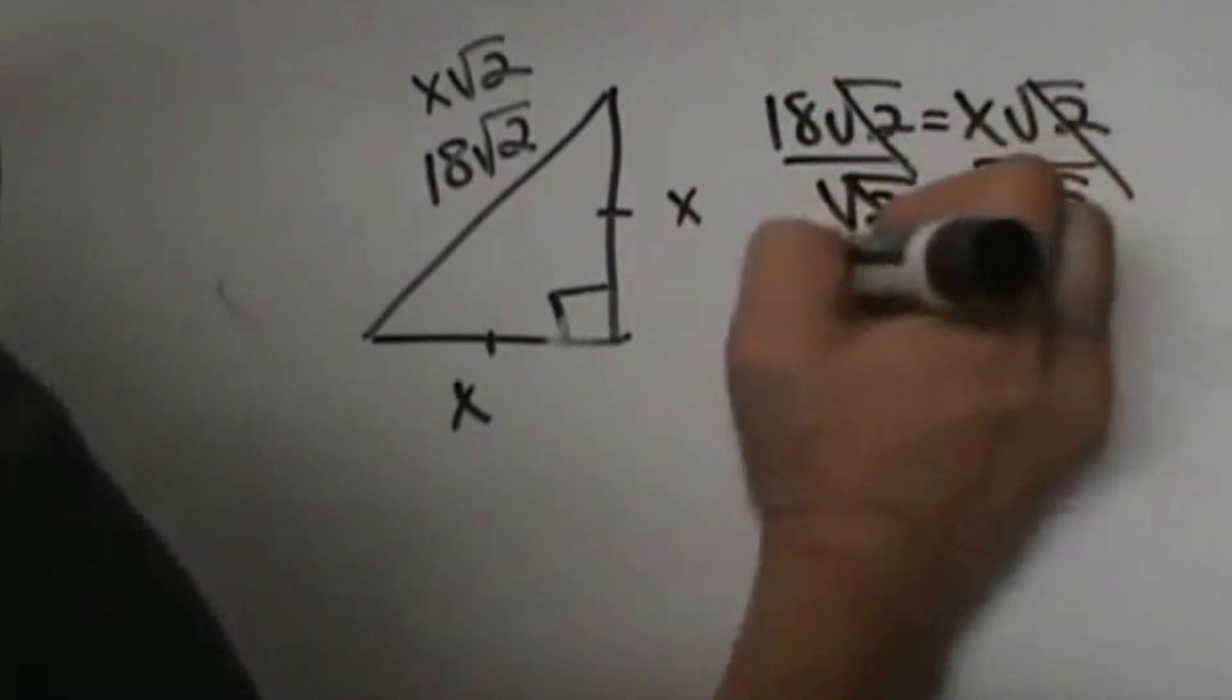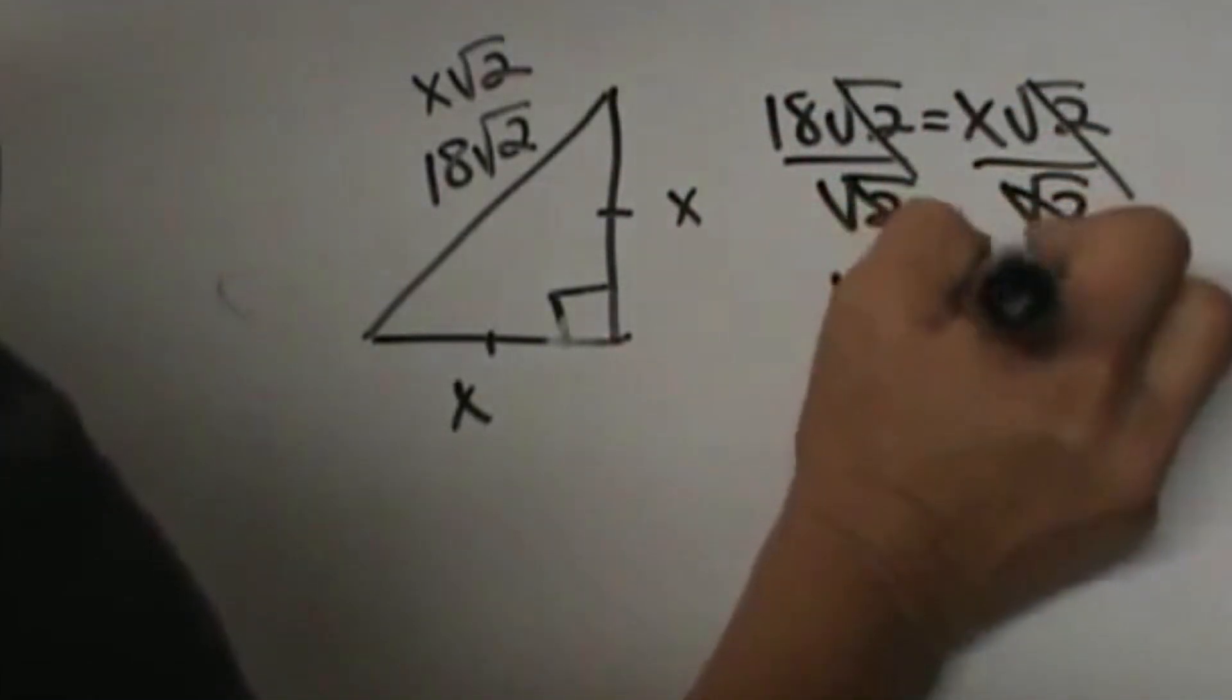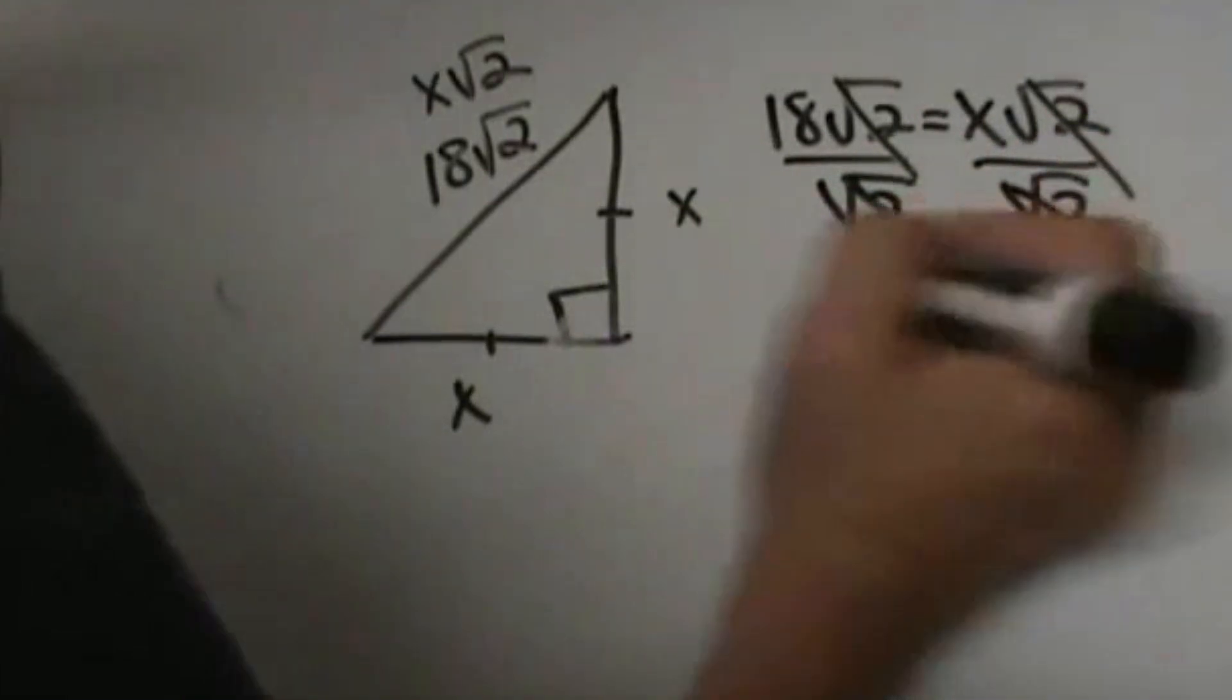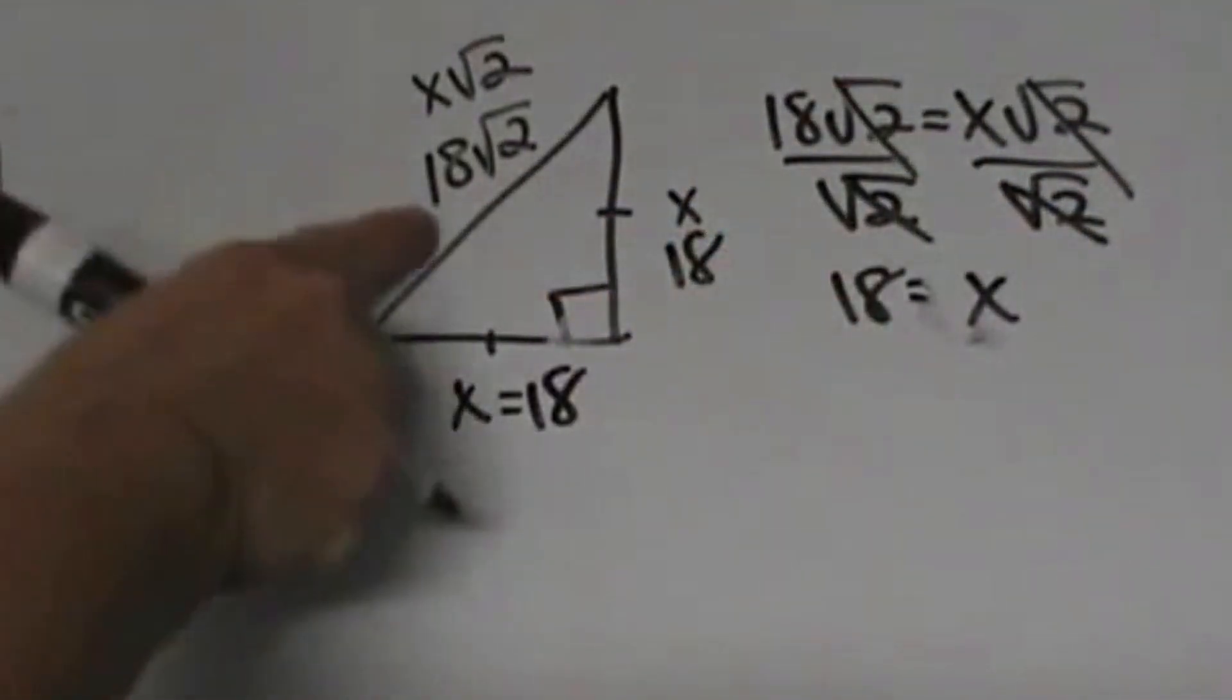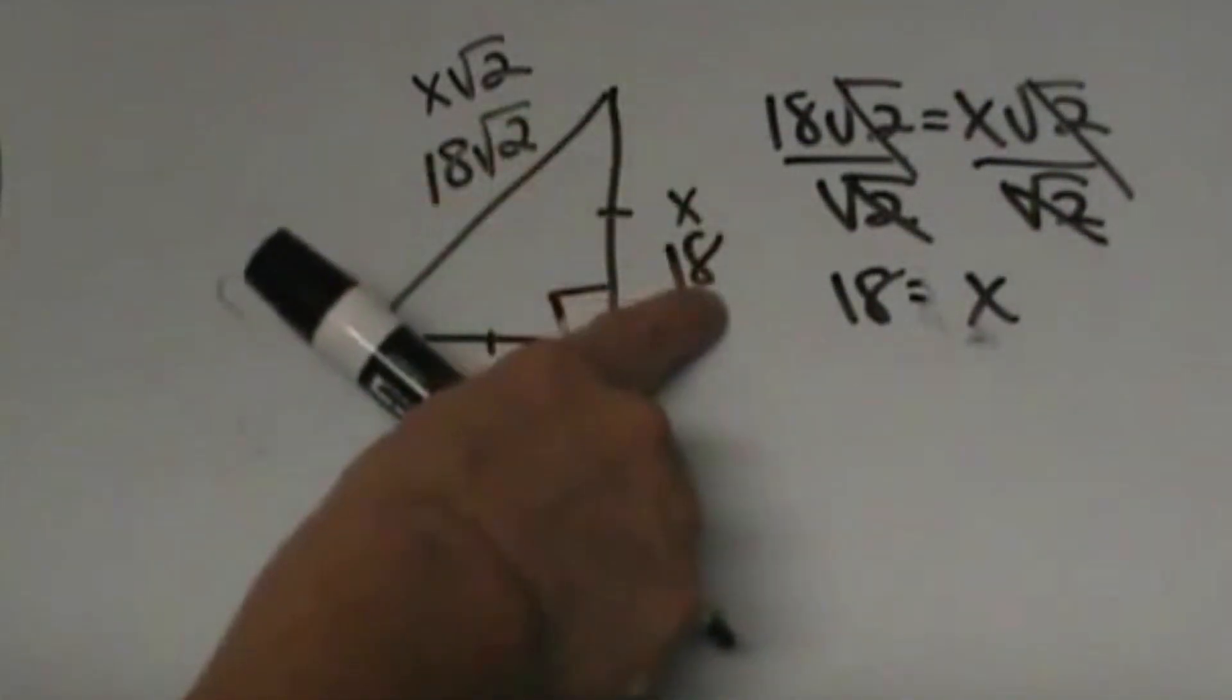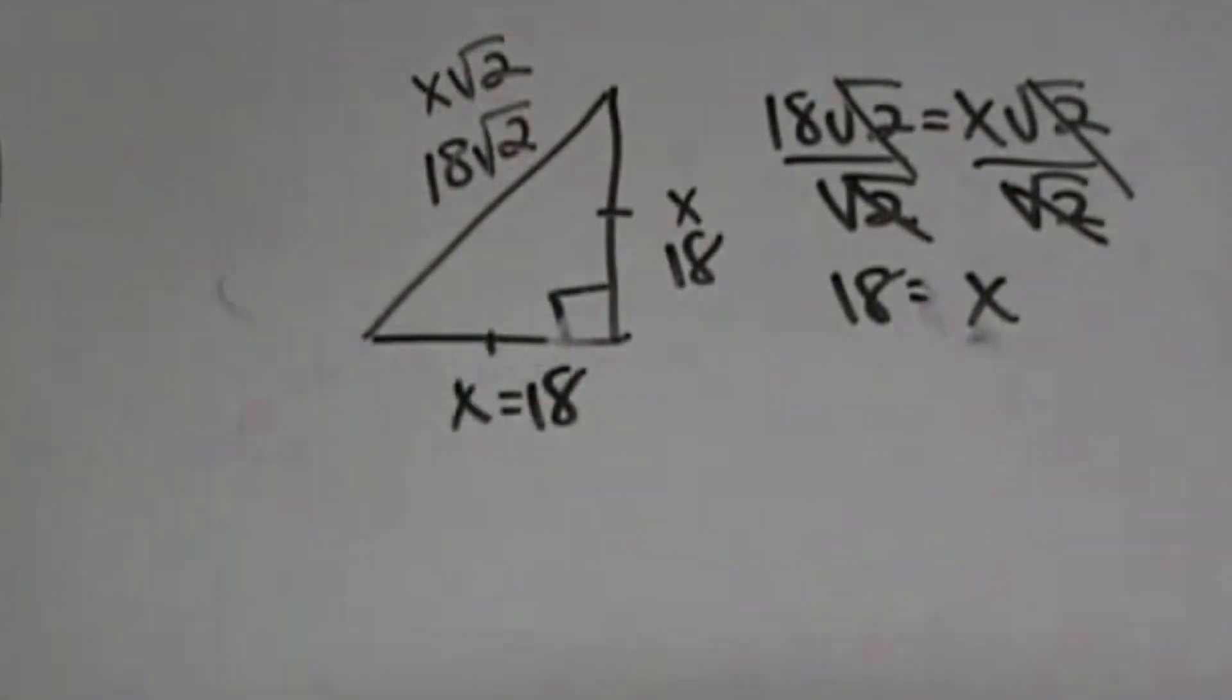You are left with x by itself. So that means each of the legs is 18. Given the hypotenuse, you are going to divide by the square root of 2 to get the leg. Given the leg, you would multiply by the square root of 2 to get the hypotenuse. Those are the patterns.